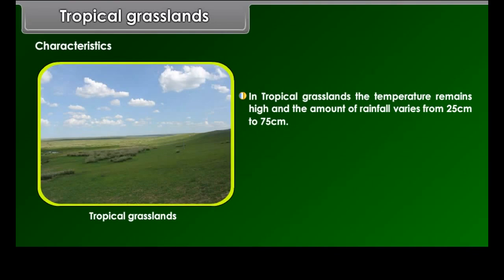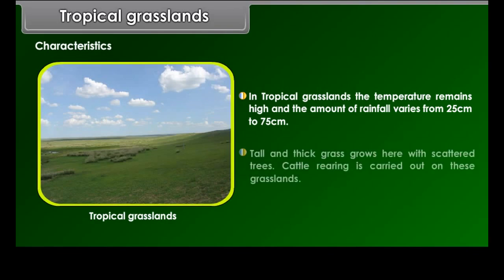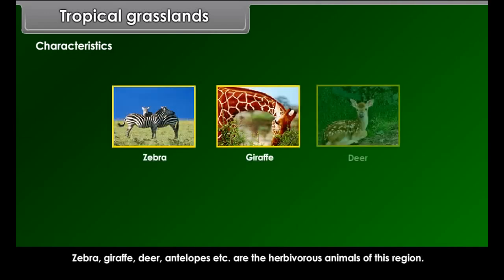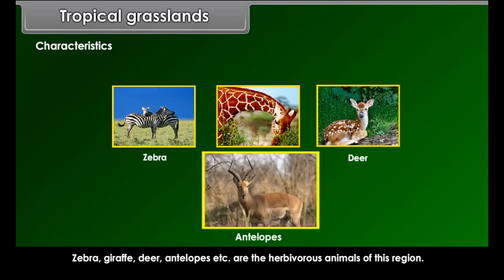Characteristics. In tropical grasslands, the temperature remains high and the amount of rainfall varies from 25 cm to 75 cm. Tall and thick grass grows here with scattered trees. Cattle rearing is carried out on these grasslands. The animals of these grasslands are both herbivores and carnivores. Zebra, giraffe, deer, antelopes, etc. are the herbivorous animals of this region.